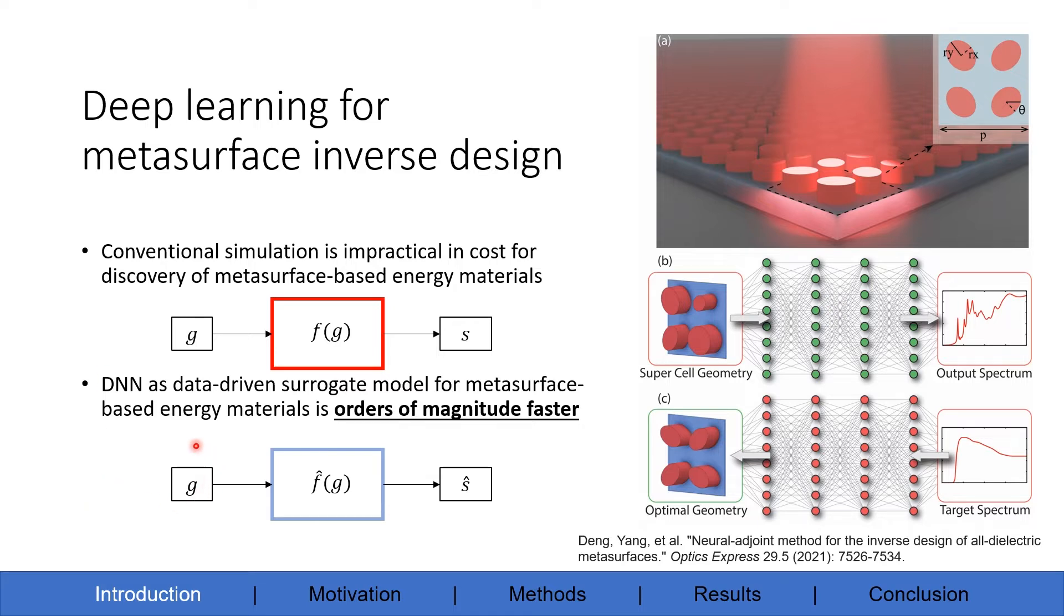By taking a geometry G, the surrogate model can infer a spectrum S in milliseconds, orders of magnitude faster than conventional simulation. Furthermore, we can train the DNN accurately with geometry and spectrum data. Once it's accurately trained, we fix the parameters of the DNN and use a target spectrum to refer back to the optimal geometry that we'd like to find.